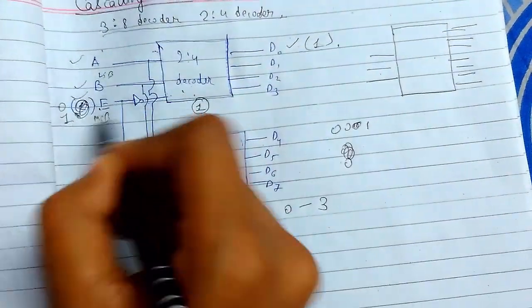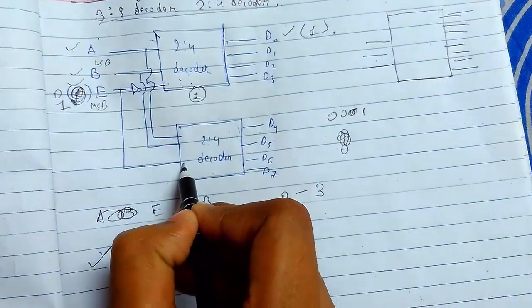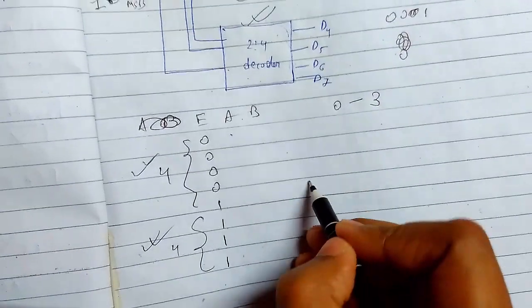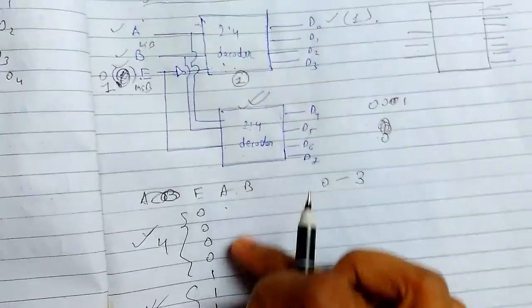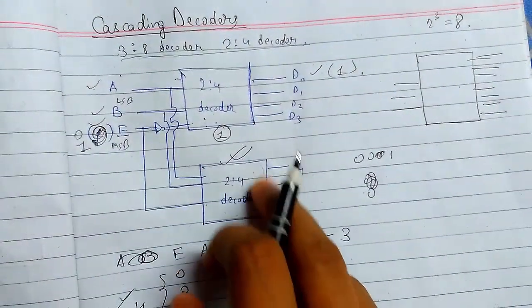Now after that when we put 1, this will become 0 because NOT gate and this will get 1. So this chip will now get activated. We will work for this part from 4 to 7. So we can get the values of the decoder. This is how the 3-to-8 decoder works.